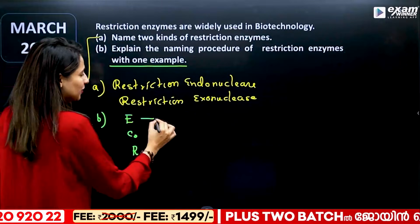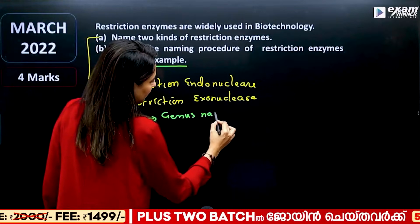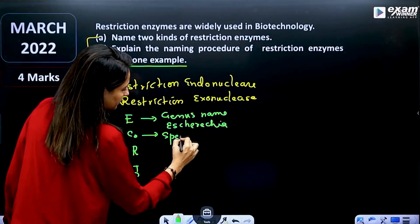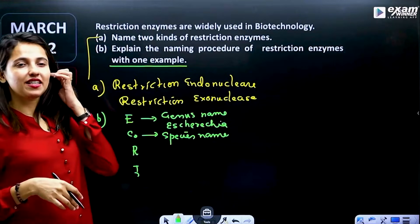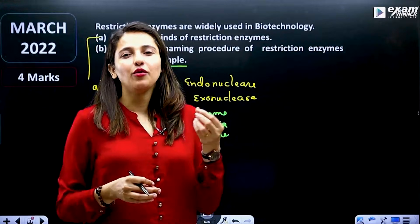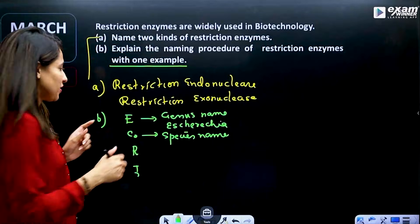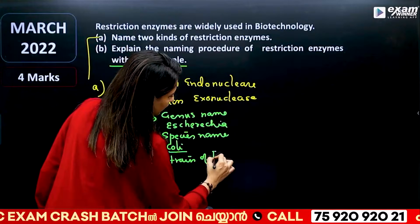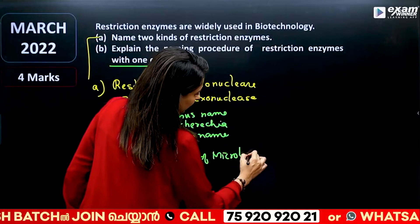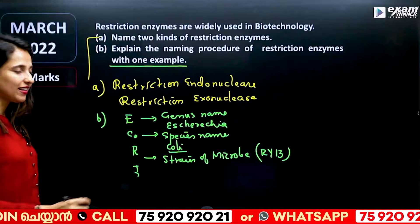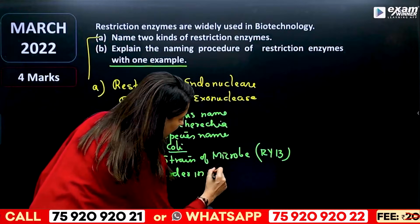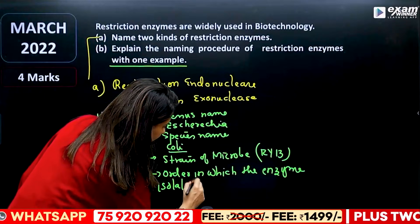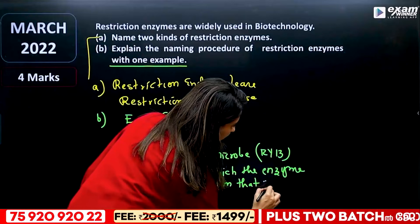ECO R1 — this is the name of the genus. The genus name is Escherichia. Then the species name — the species of the microorganism from which the enzyme is isolated. The first two terms represent genus and species. Then R1 is the strain of bacteria, the strain of the microorganism. RY13 is the strain, and the number indicates the order in which the enzyme is isolated from that strain.